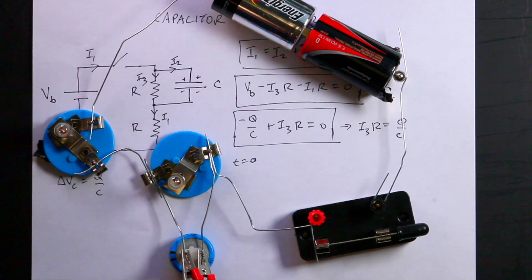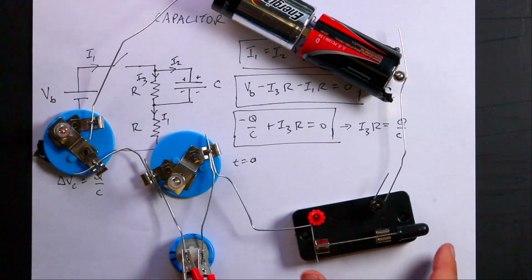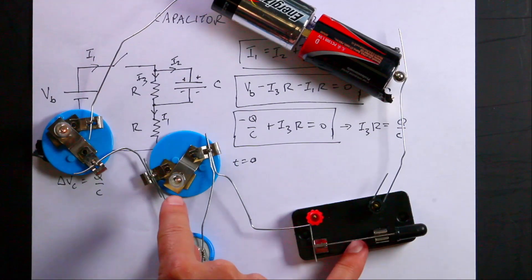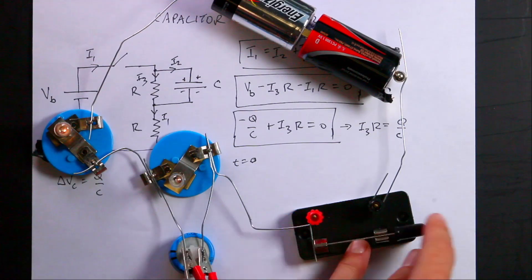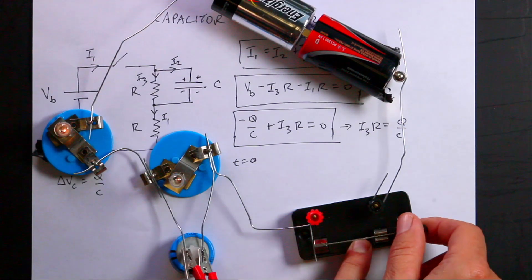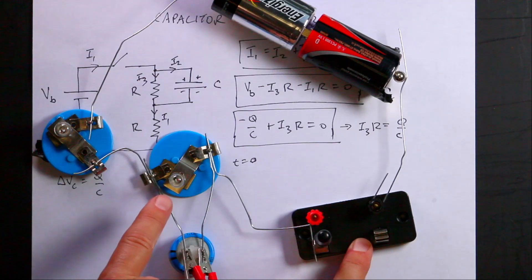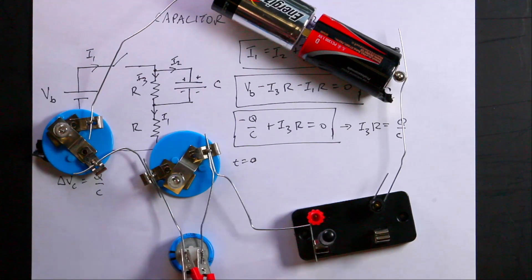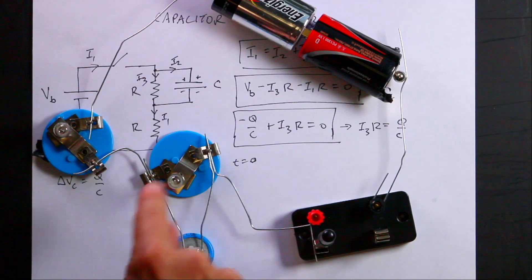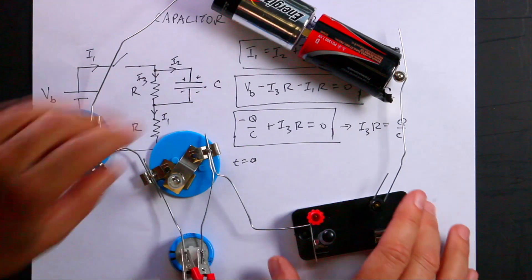Just for fun, I'm going to turn off the switch and you can see what happens. This one's going to discharge. That one's still bright and it's dimming down as the capacitor discharges through there.